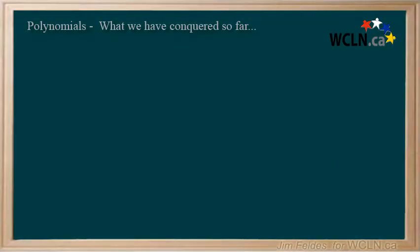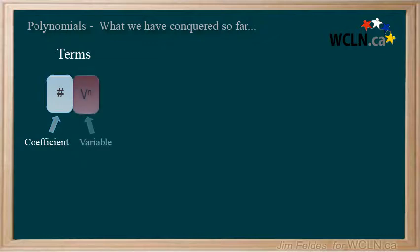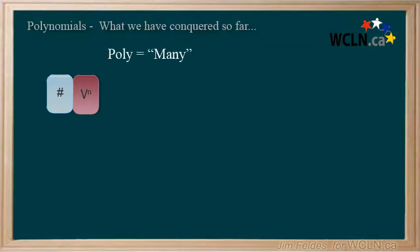What have we learned about polynomials so far? We figured out that they're made up of terms, which consist of a number part or coefficient and a variable raised to a positive whole number. We also learned that not all polynomials have many terms, and that those with less than four could be given specific names.